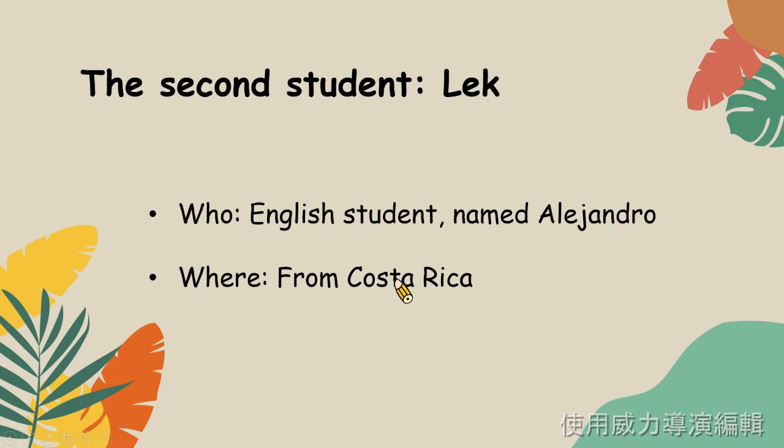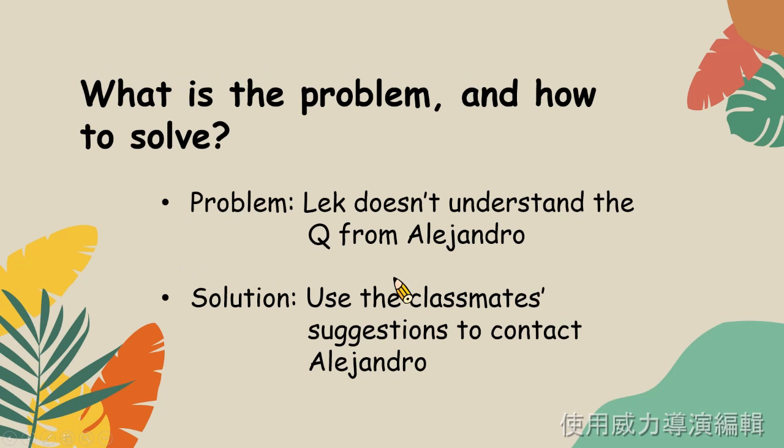So Lak said that he received a comment from an English student named Alejandro from Costa Rica. The problem is that Lak doesn't understand the questions from Alejandro. The teacher suggested Lak use his classmates' suggestions to contact Alejandro. 碰到的問題就是說Lak根本就不知道Alejandro在問什麼,老師就說那你要不要試試看,用用看其他同學給你的建議呢?